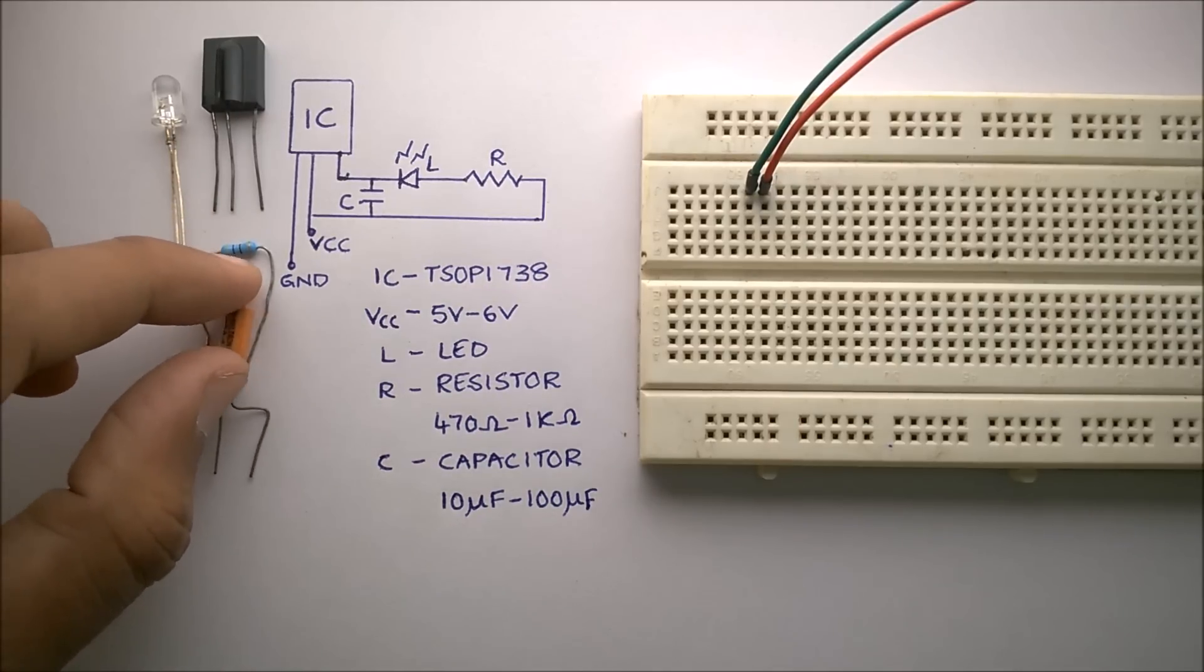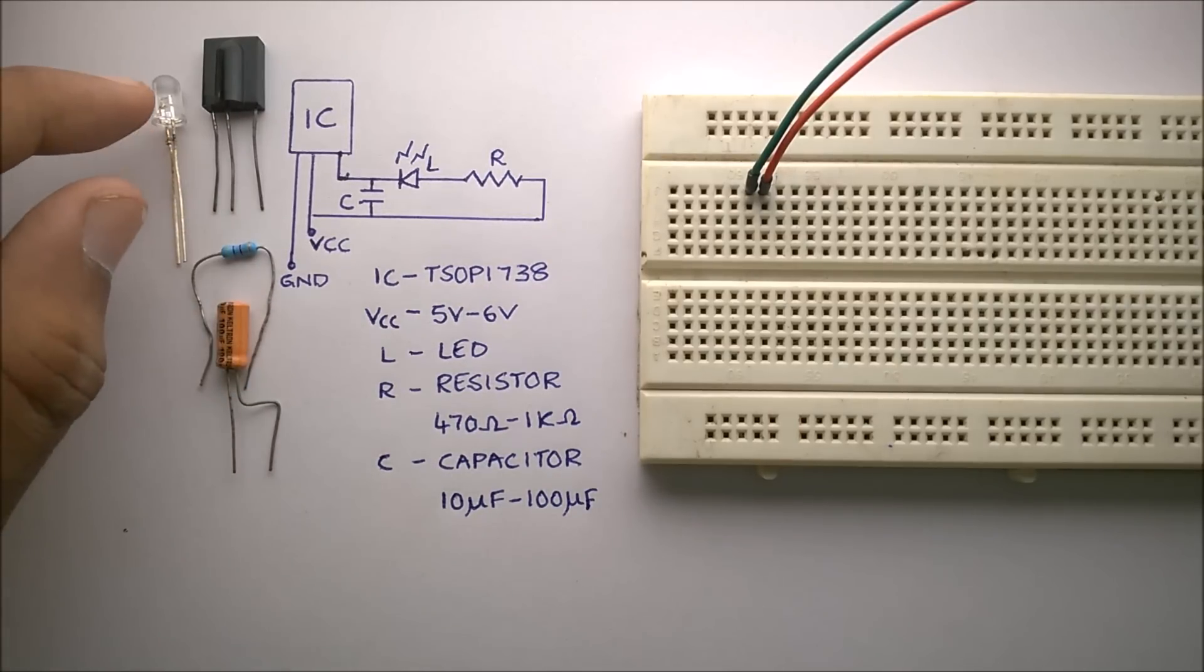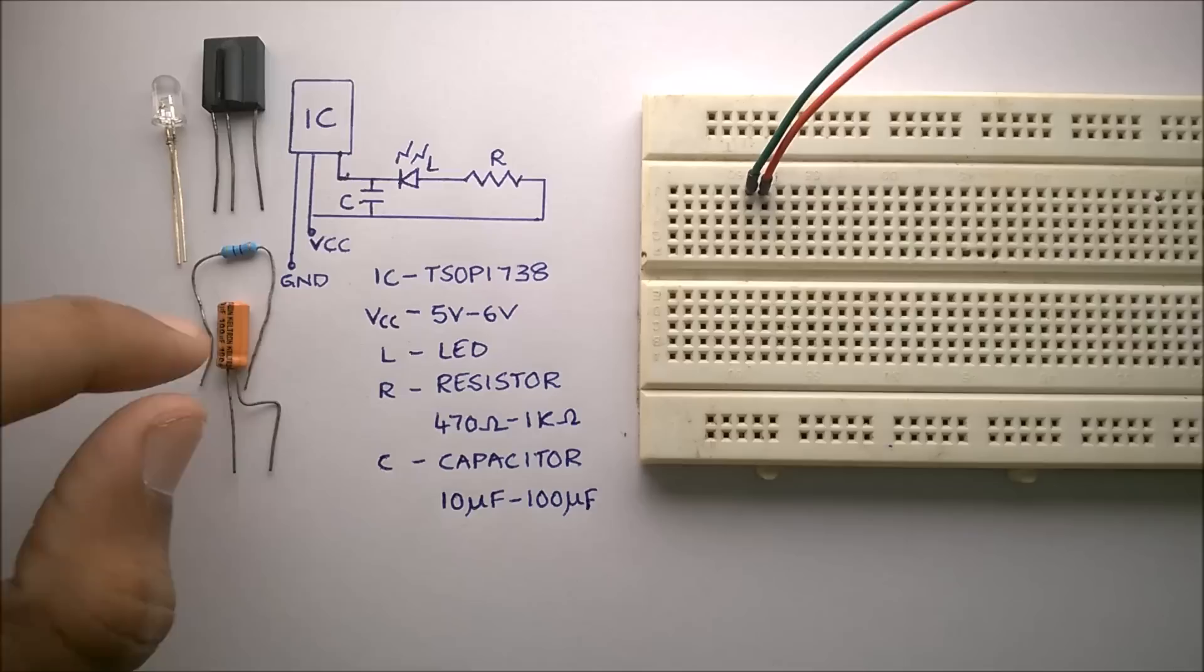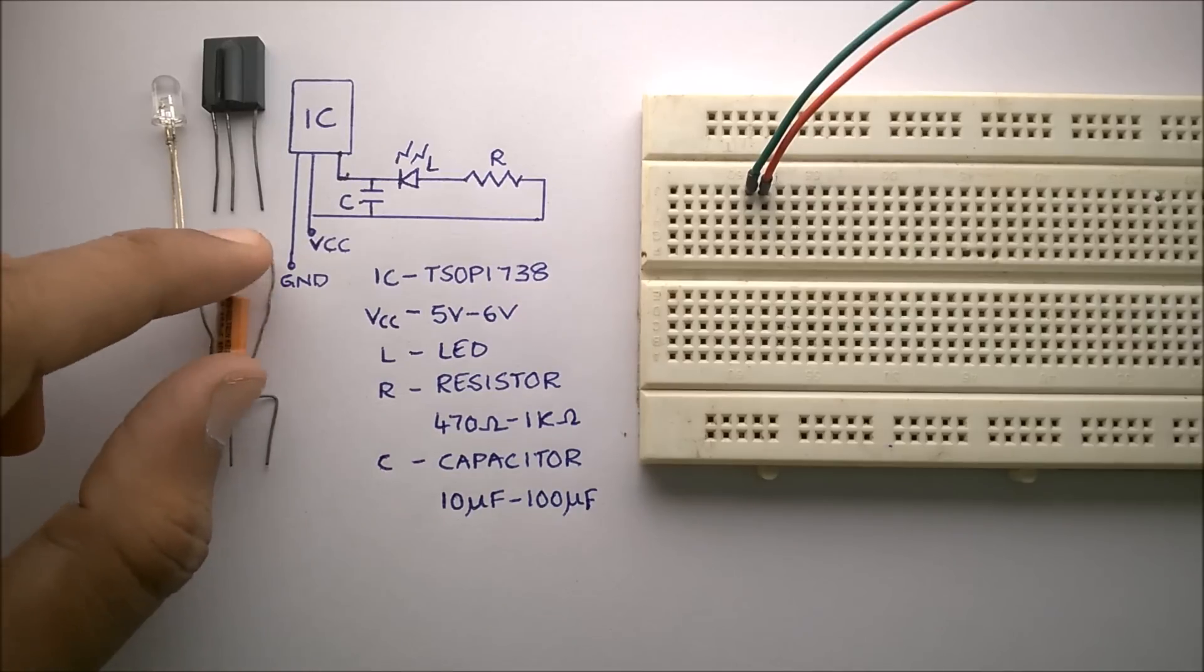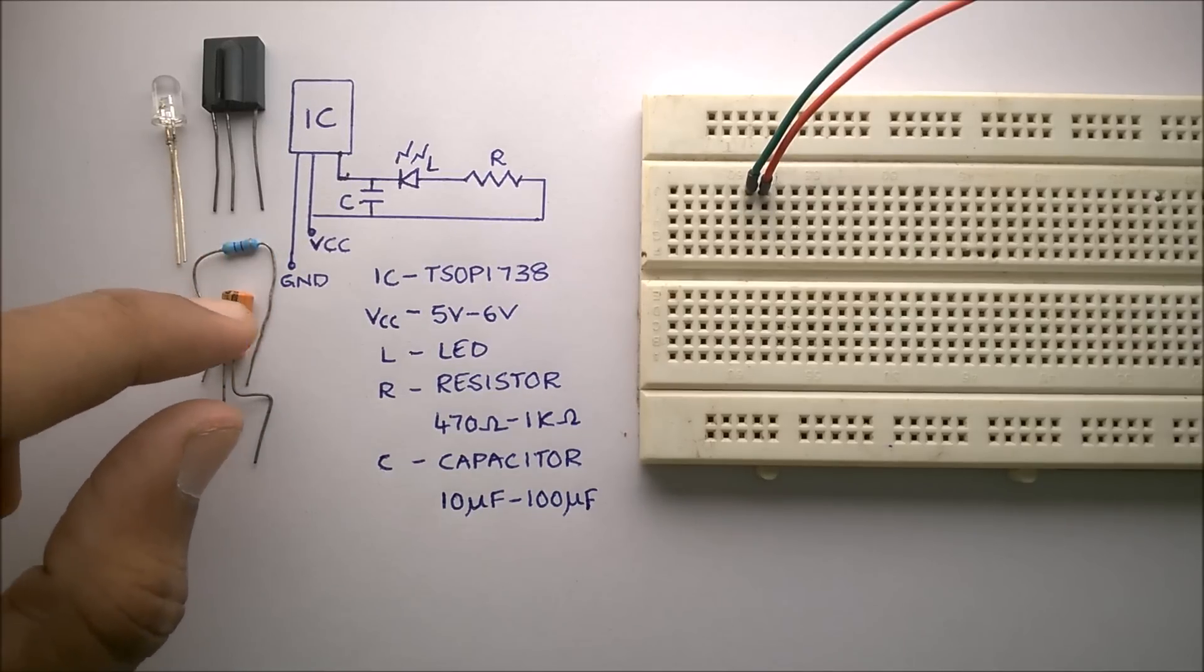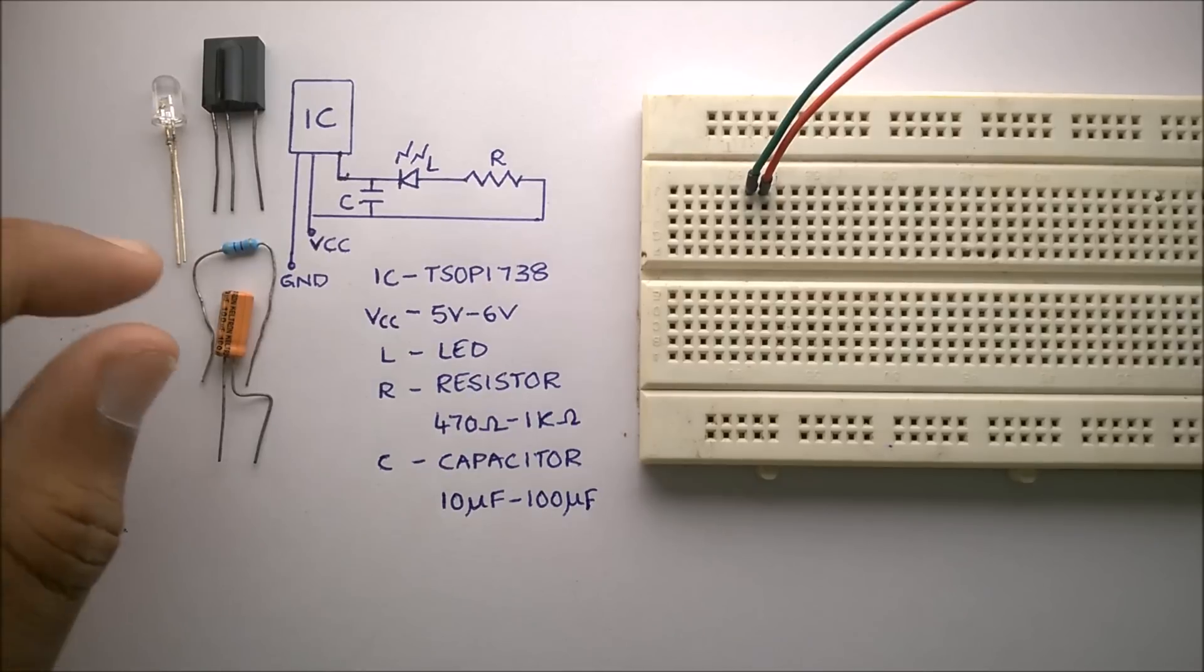A capacitor. This capacitor is to reduce the flickering of the LED, and you can use any capacitor between 10 microfarad to 100 microfarad. I prefer 100 microfarad so that the glow of the LED will be smooth.